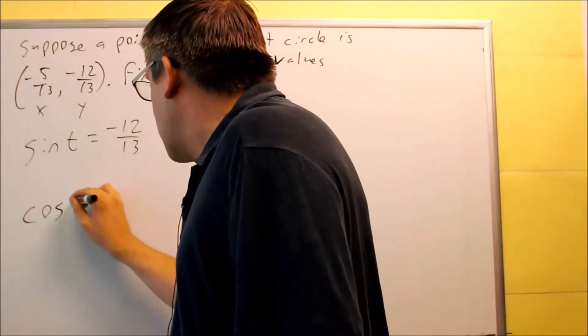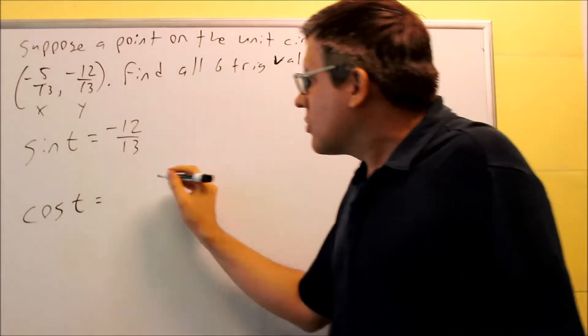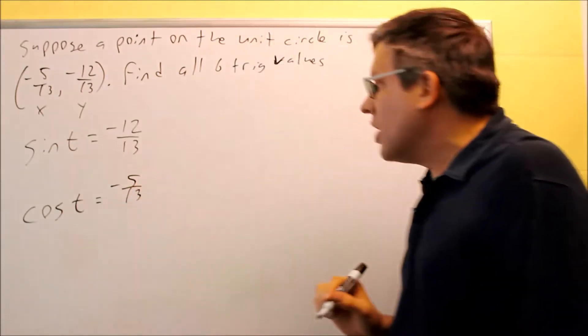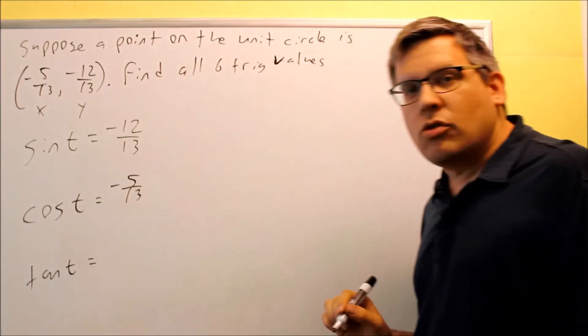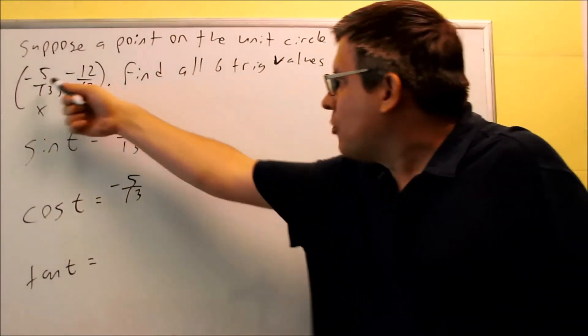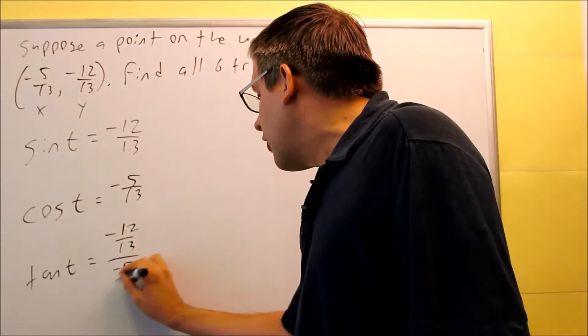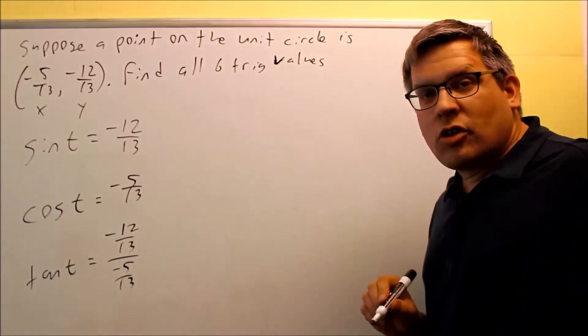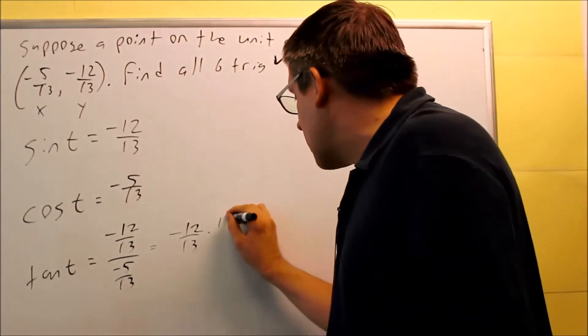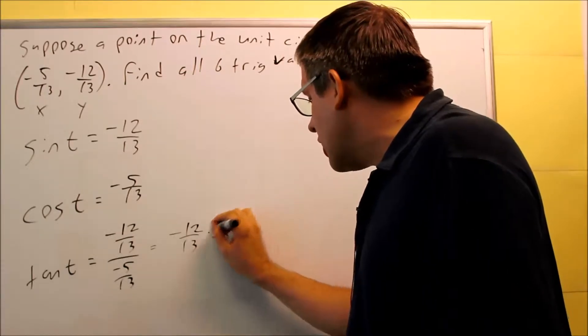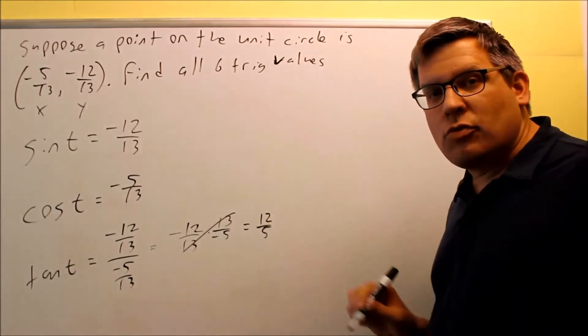Next one is cosine t. Cosine t is the x value according to our definitions, so this is going to be -5/13. Next, we want to find tangent. Tangent t is equal to the y value over the x value. We have both of those. Y value, -12/13, over the x value, -5/13. Because we have a fraction over a fraction, we have to take the top fraction, multiply by the reciprocal of the bottom one. So that's going to be 13 over -5. The 13ths are going to cancel, the negatives cancel, and we're going to get 12/5.